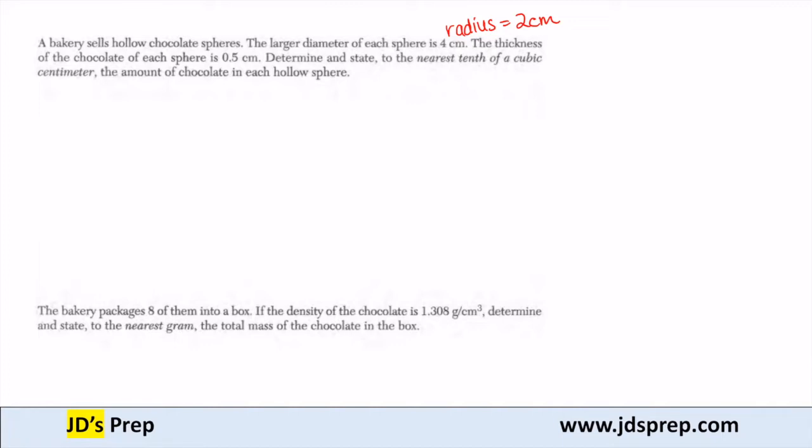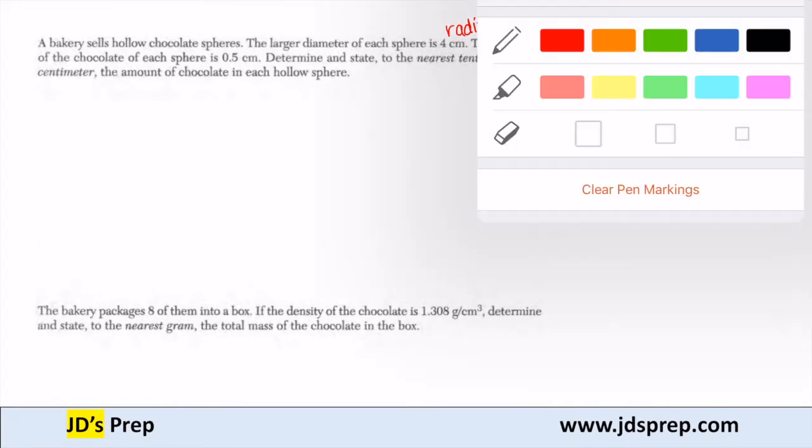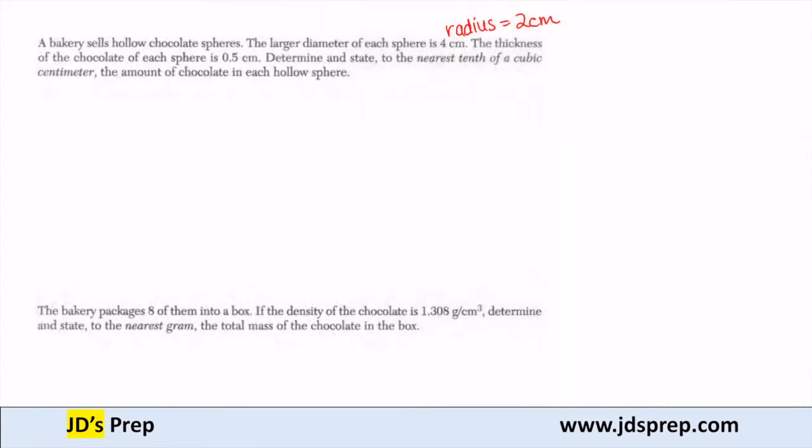So in order to illustrate this, I'm just going to draw two circles on our page. When we have a sphere, the cross section is a circle, right?